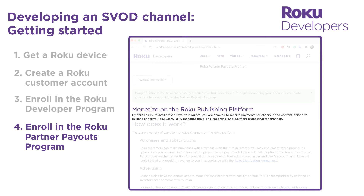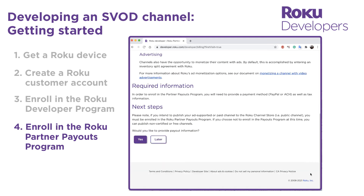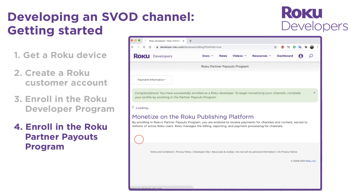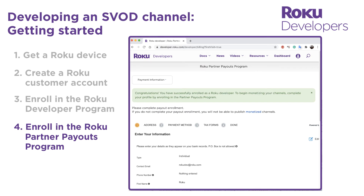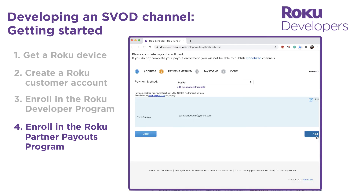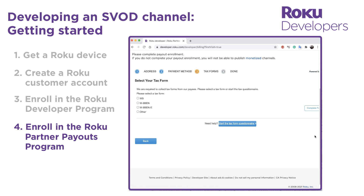The last step is to enroll in the Roku Partner Payouts Program. This enables you to receive payouts from purchases of your subscription channel. Monetized channels cannot be published without enrollment. To enroll, scroll down, click Yes, and then provide your address and other contact information, along with your payout method — which may be direct deposit, wire transfer, or PayPal. If you're in the United States, you can also select ACH as a payout method.